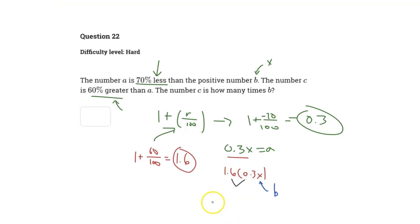So 1.6 times 0.3 gives us a value of 0.48. So 0.48 times B is equivalent to the value of C. When it asks the number C is how many times B, well, we have it right here: it is 0.48 times B.